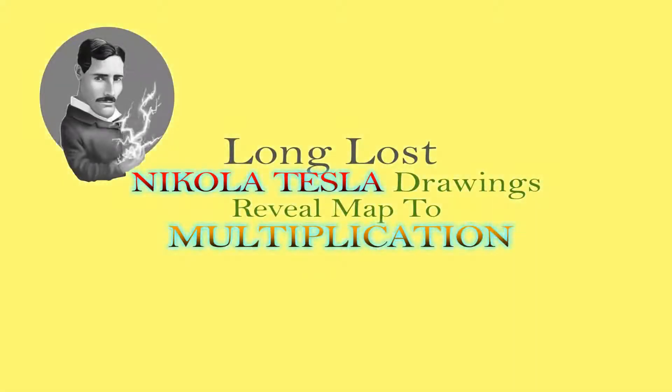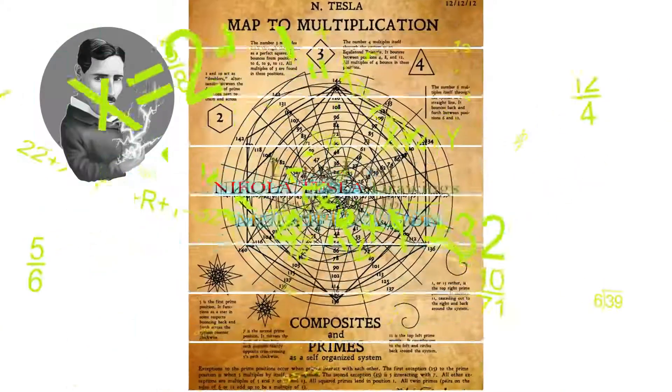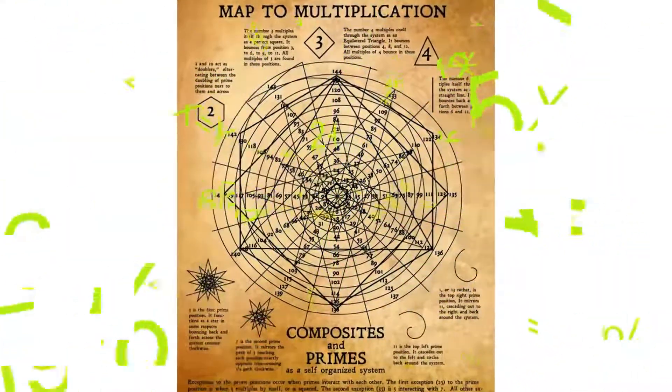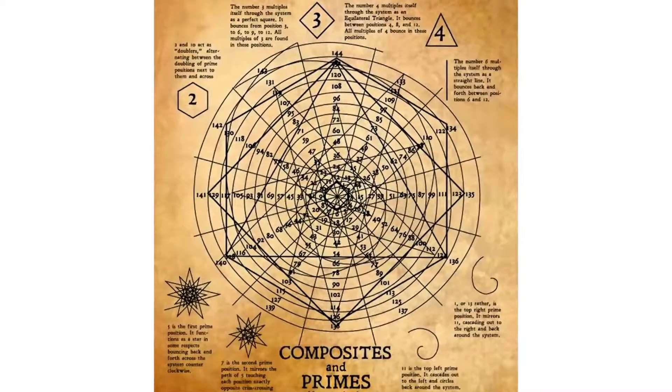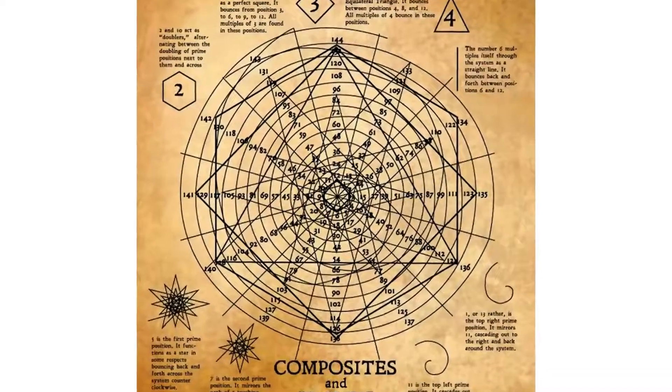Long Lost Nikola Tesla Drawings Reveal Map to Multiplication. A recently discovered set of original Nikola Tesla drawings reveal a map to multiplication that contains all numbers in a simple-to-use system.